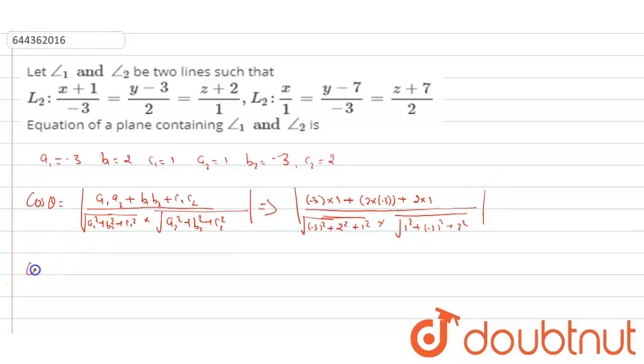So, cos theta is equal to mode of minus 3 minus 6 plus 2 upon root of 14 into root of 14. This will equal to mode of minus 7 upon 14, which is equal to 1 by 2. Then, cos theta is equal to cos 60. The value of theta is equal to 60 degrees.